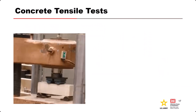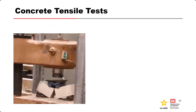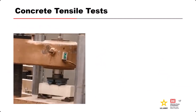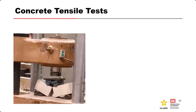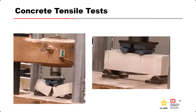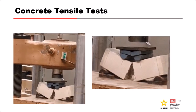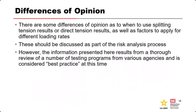Then we have our flexure test, sometimes called the modulus of rupture test. We take a beam, load it at the third points, and get a uniform tensile stress at the bottom. Once it breaks, we record the load and back out what the tensile stress was at that location. There are some differences of opinion on which test is best — they all have their pros and cons. Most of the time you won't have a choice of which test to use. It's important to understand the strengths and weaknesses of each and how to interpret those results.